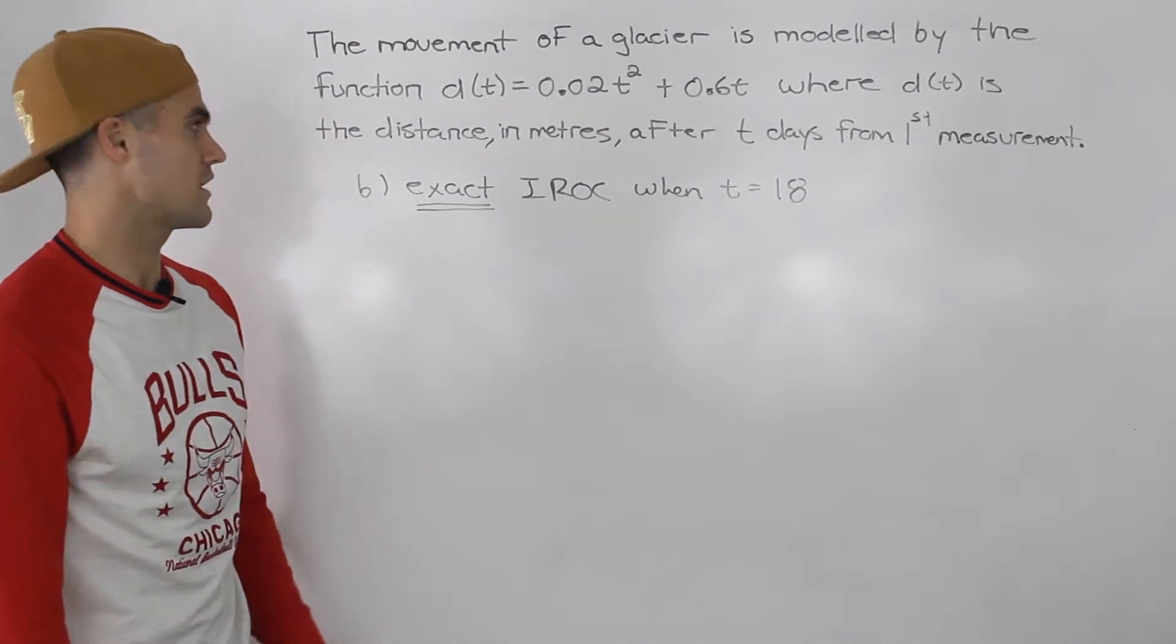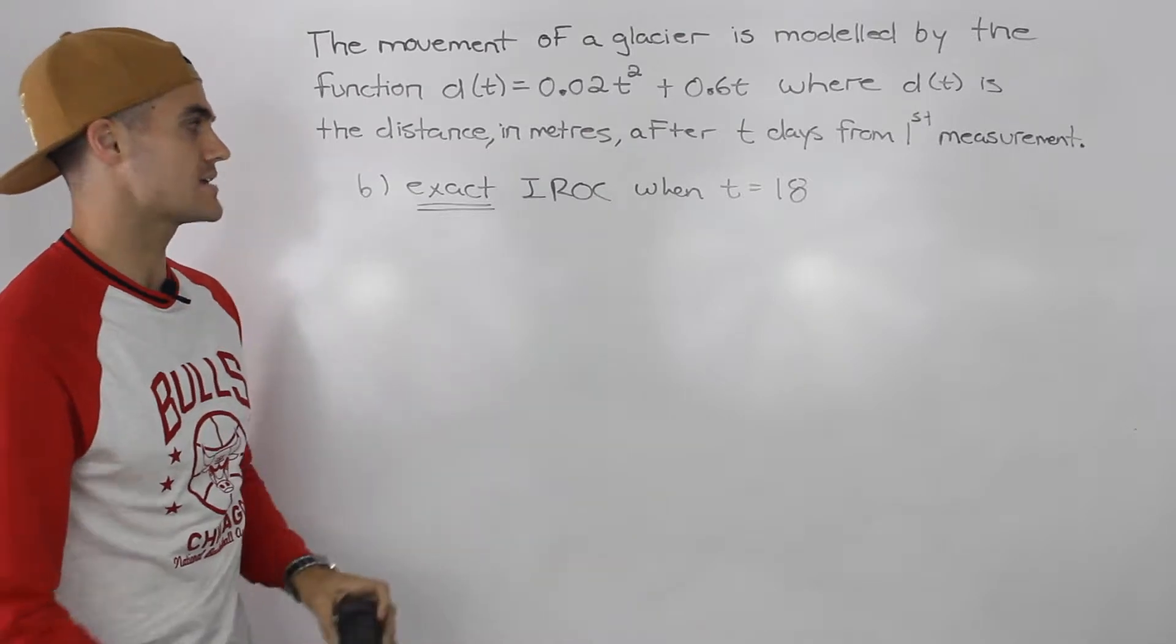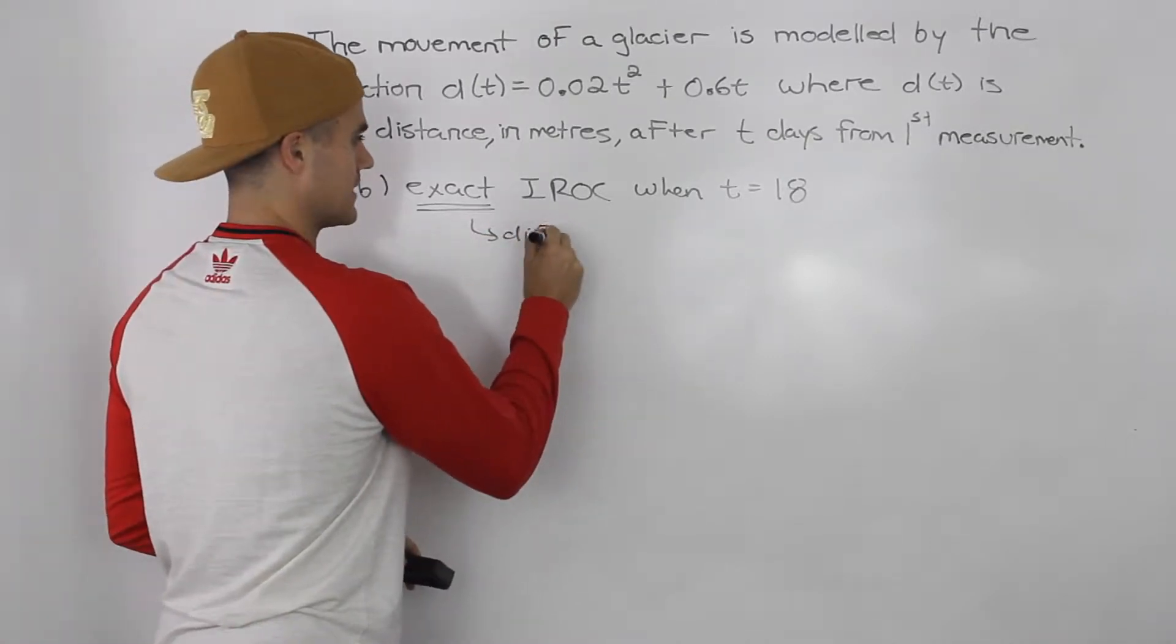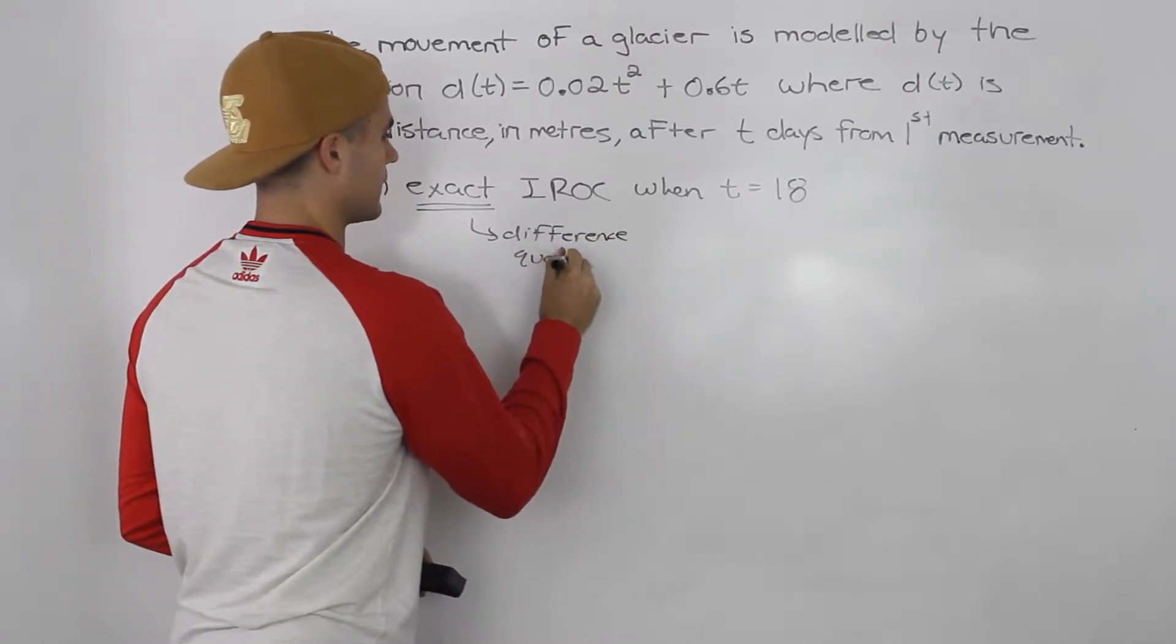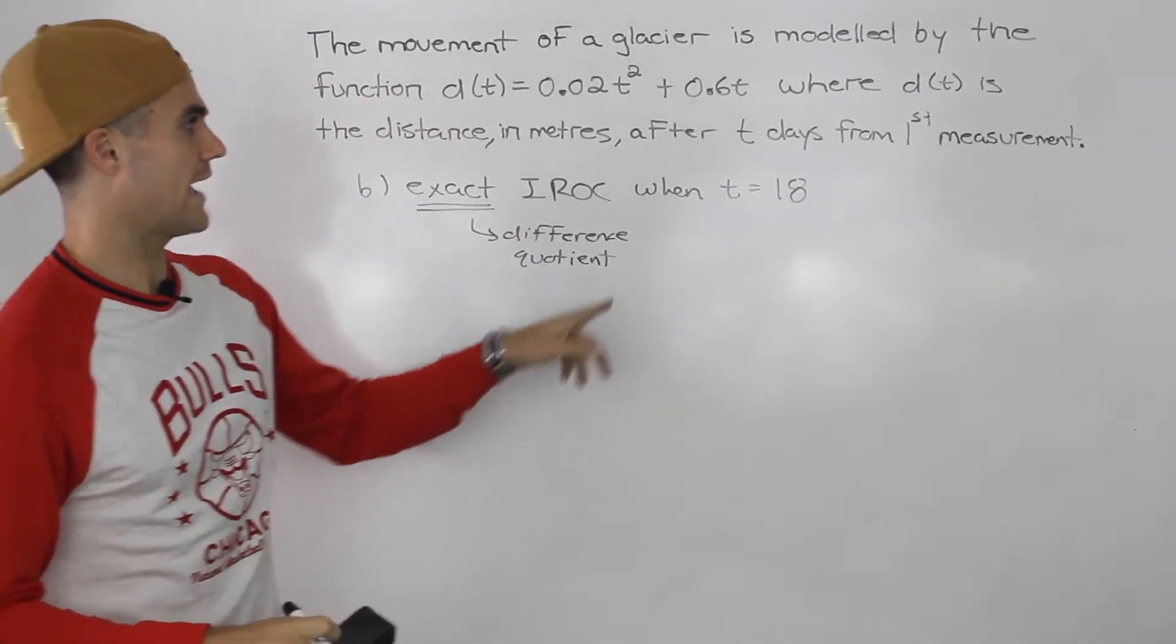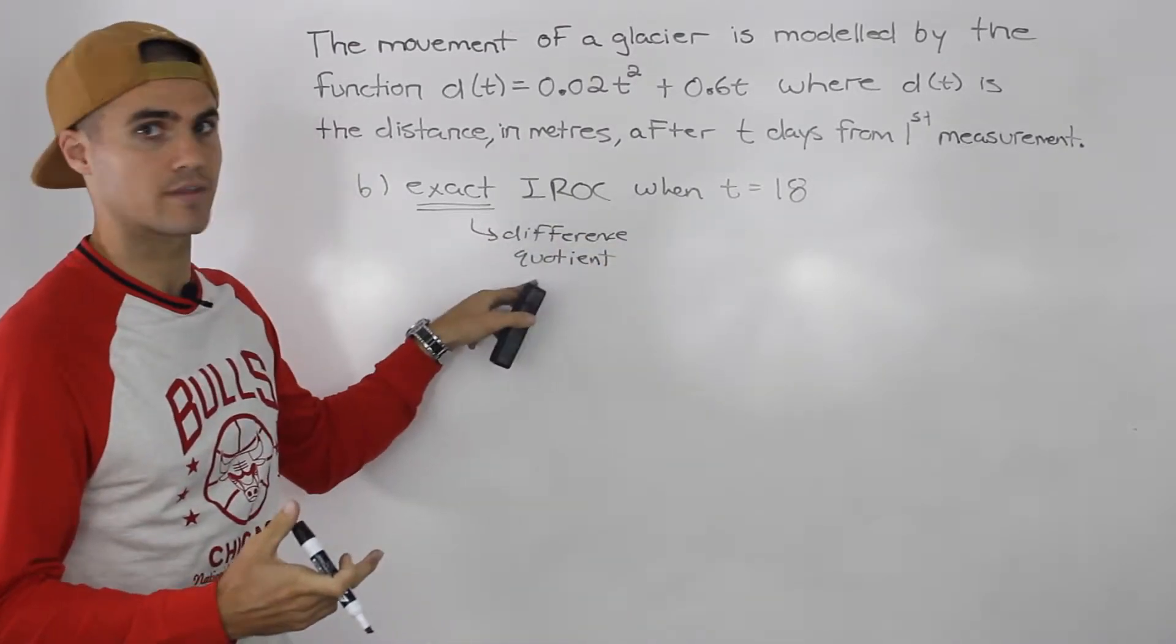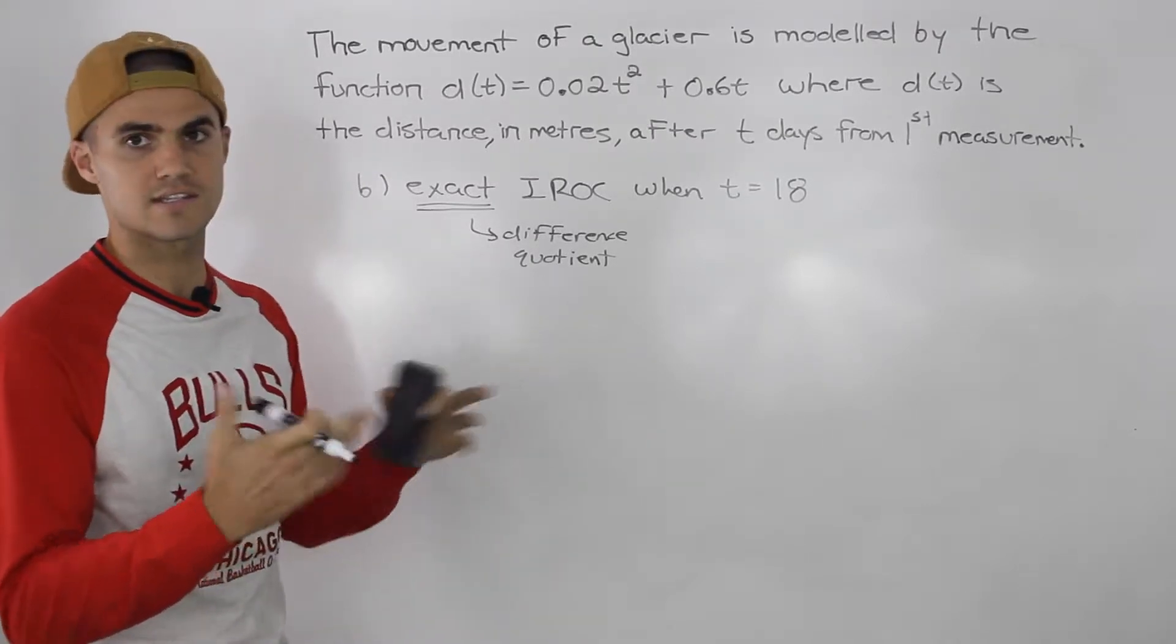Moving on to part b, they want the exact instantaneous rate of change at 18 days. Because they're asking for the exact instantaneous rate of change, the only way to get that is with the difference quotient, algebraically manipulating it. Depending on your teacher, maybe they'll let you do it an easier way with the centered interval, preceding interval, following interval, etc.